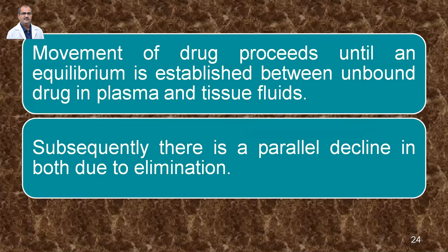The movement of the drug proceeds until equilibrium is established between unbound drug in plasma and tissue fluids. Even if a drug is administered intravenously with 100% absorption, bioavailability is not 100% because of binding between plasma proteins. Subsequently, there is a parallel decline in both due to elimination — as drug concentration reaches maximum, elimination and metabolism start simultaneously.